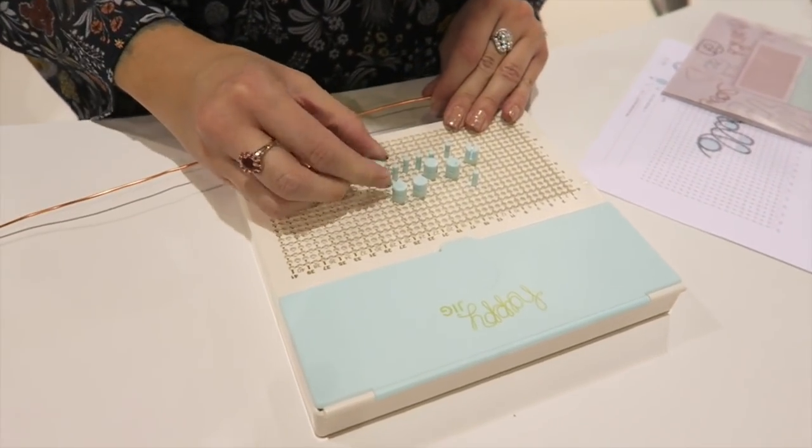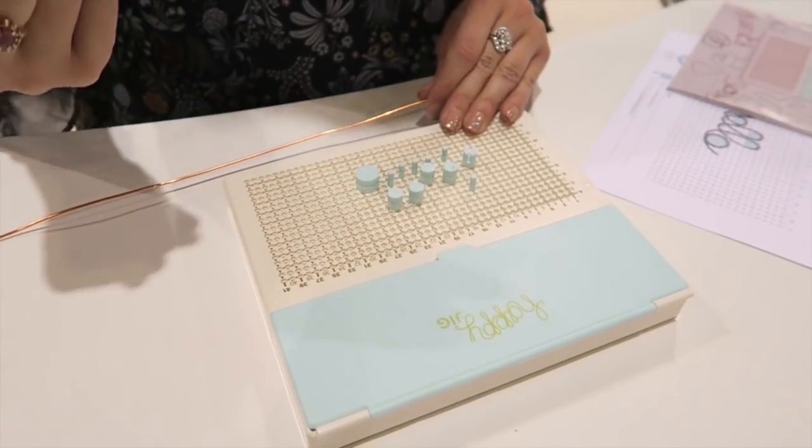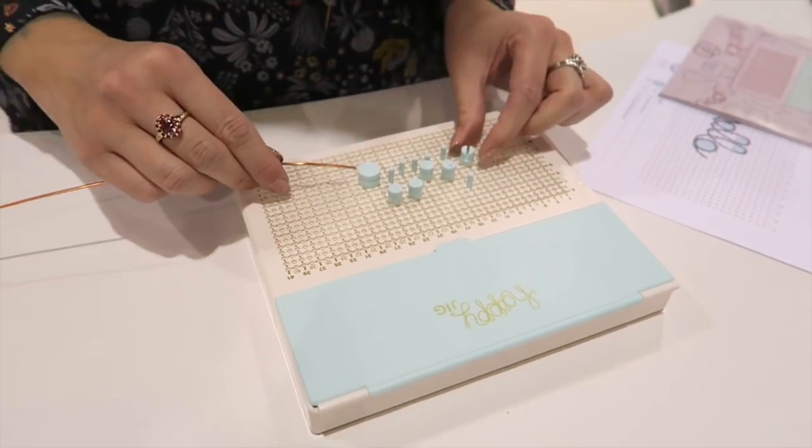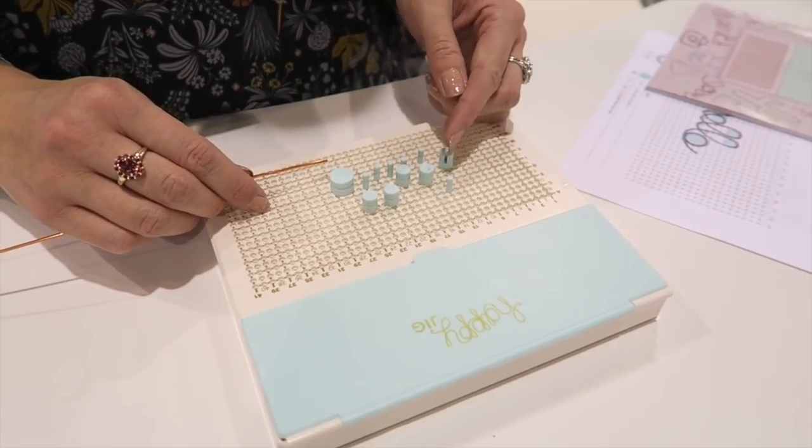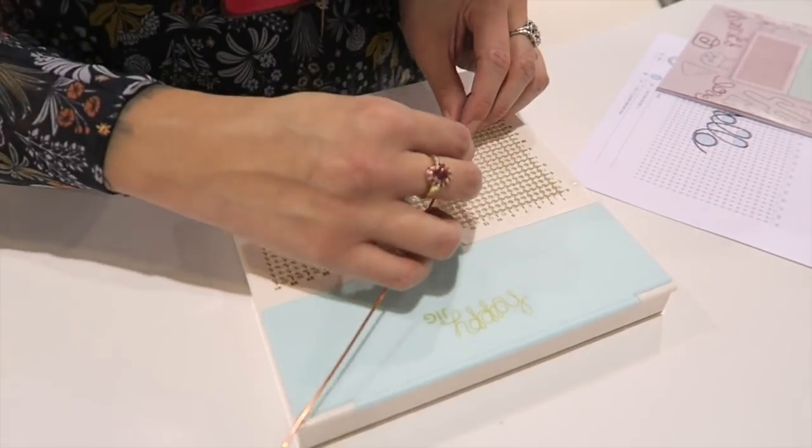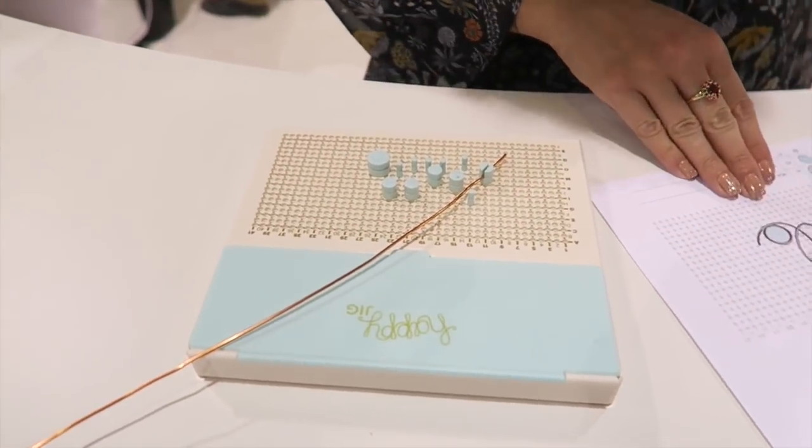Alright so the pegs lock into place so that while you're bending they don't pop out. And then we also have a starting peg right here which has the slot in it to help hold the wire. So you insert it just like that.